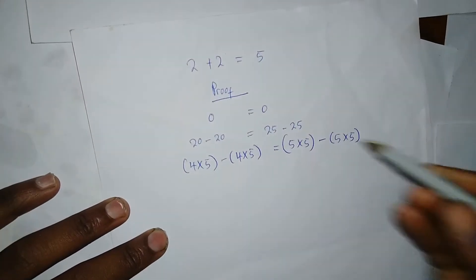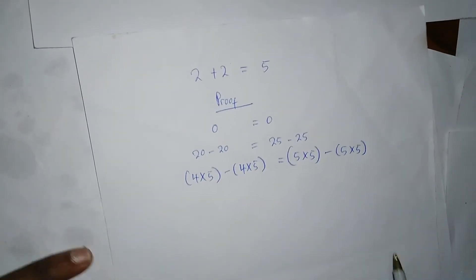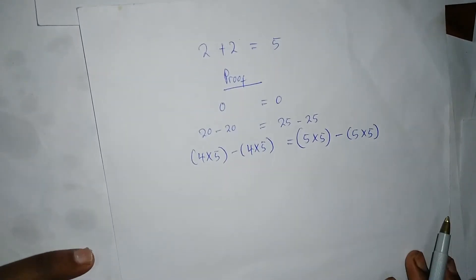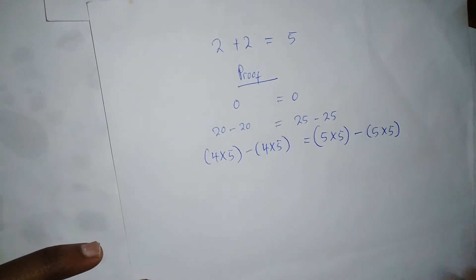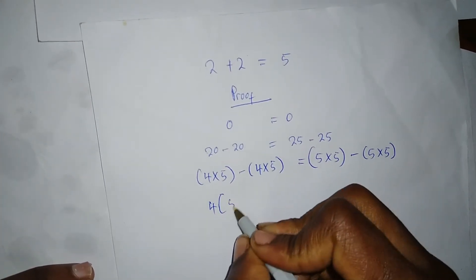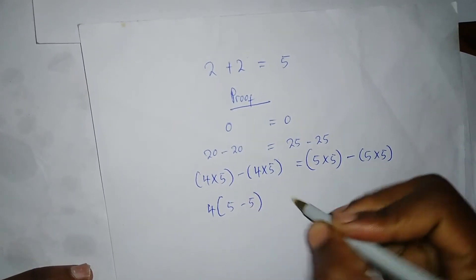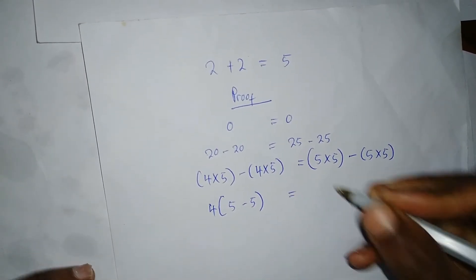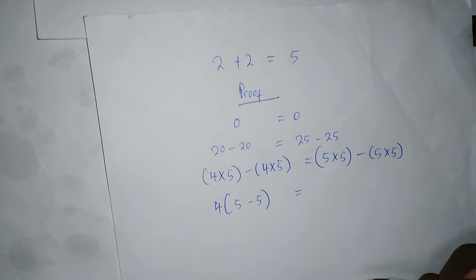is 20 minus 20, 25 minus 25, which is 0 equals 0, right? I haven't changed anything so far. So I can factor out 4, it becomes 5 minus 5 is equal to, I can factor out here 5,